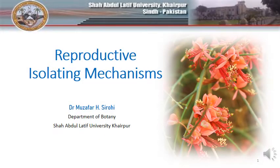Have you ever wondered why two separate species cannot mate and produce offspring? There is a comprehensive mechanism that operates behind the scenes to keep species intact. That phenomenon is called Reproductive Isolation Mechanism.